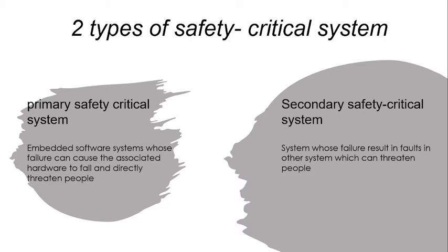There are two types of Safety Critical Systems. The first is the Primary Safety Critical System. It is an embedded software system whose failure can cause the associated hardware to directly threaten people. Examples of failures include damage to the environment. Examples of primary safety critical systems include weapon systems, aircraft, medical devices, and nuclear power plants.